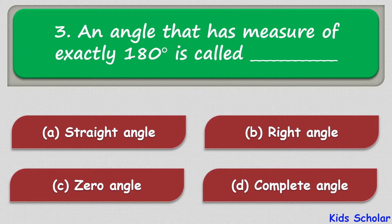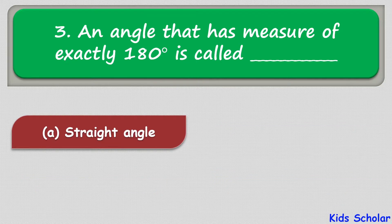The next question is: an angle that has a measure of exactly 180 degrees is called — the options are straight angle, right angle, zero angle, and complete angle. The correct answer is straight angle.